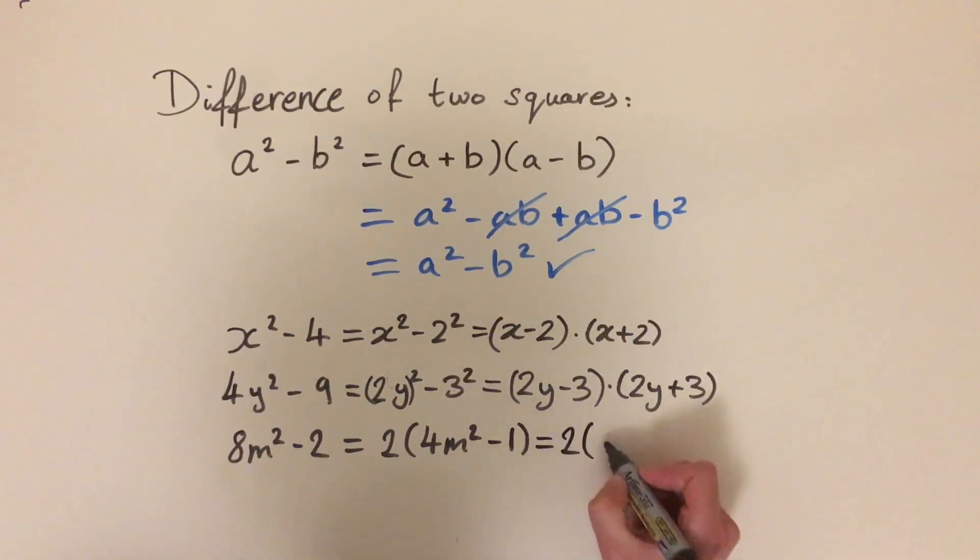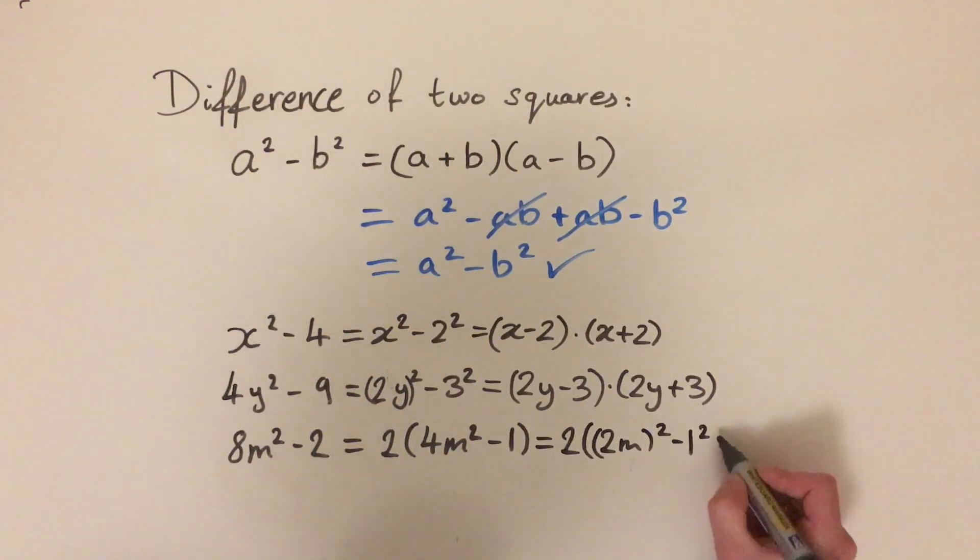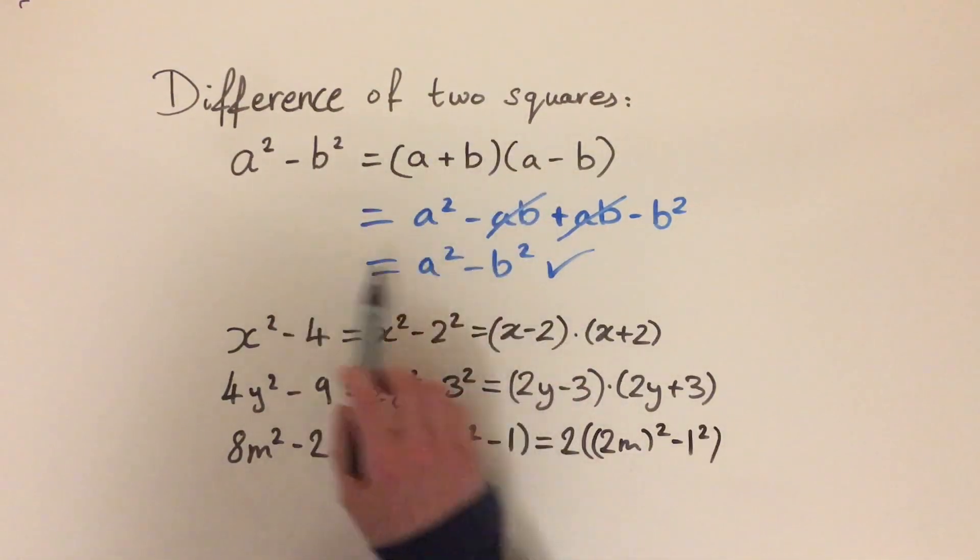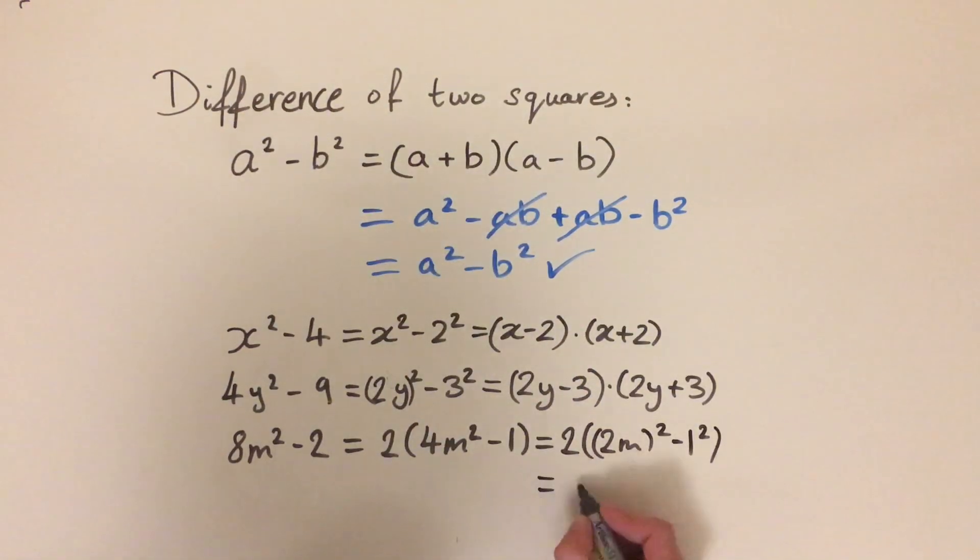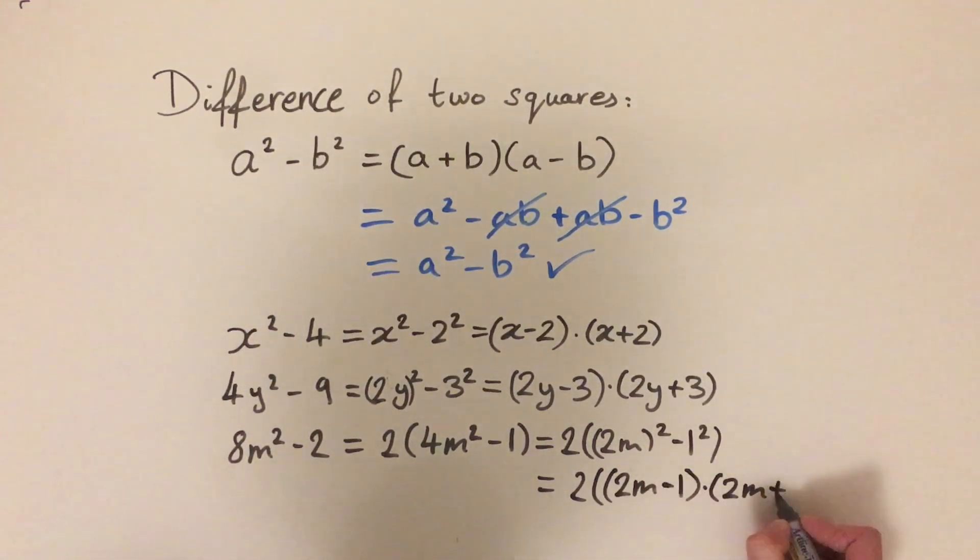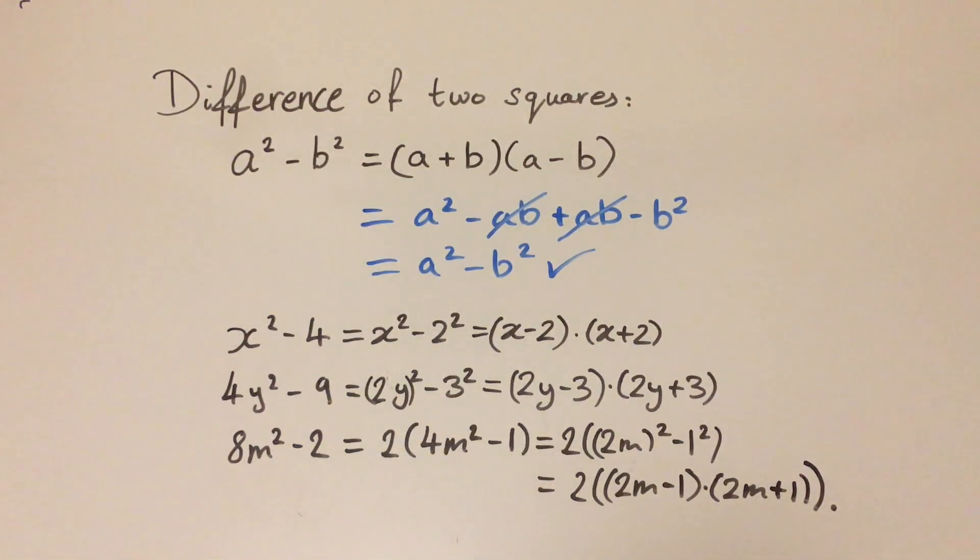And now 4 is a square number and 1 is a square number. So we can write this as 2 times 2m all squared minus 1 squared. Because 1 squared is just 1. So now we've got the difference of 2 squares and we can use the formula. So we're going to get 2 times 2m minus 1 times 2m plus 1. And that's, we've got one more bracket and there we have it. So that is the simplified form of these expressions. So that's the first one. And we'll get started.